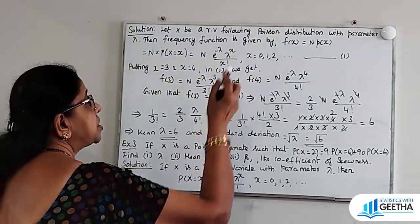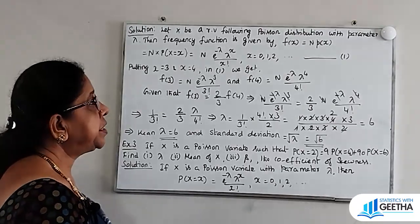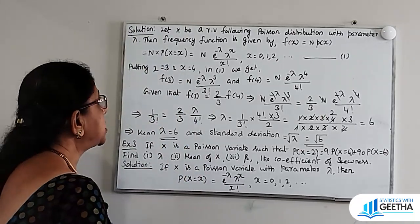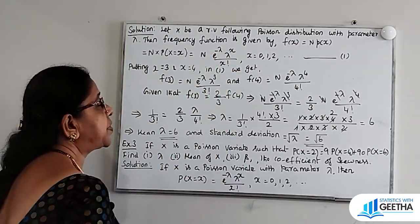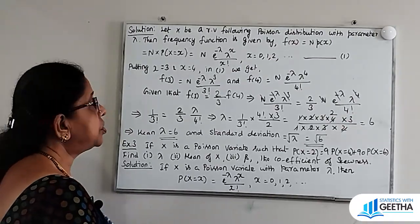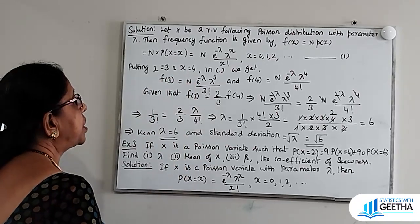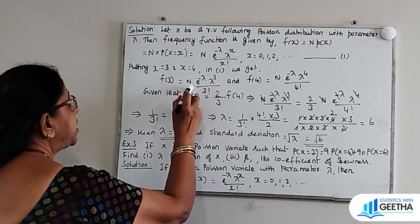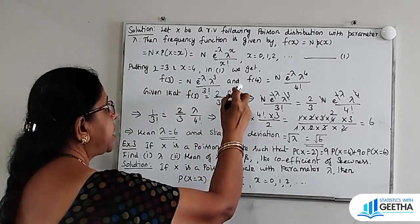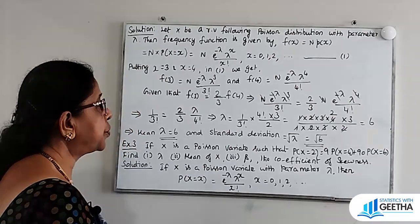The frequency function is given by f(x) = N · P(X=x), that is N · e^(−λ) · λ^x / x!, where x = 0, 1, etc. Putting x = 3 and x = 4, we get f(3) = N · e^(−λ) · λ³ / 3! and f(4) = N · e^(−λ) · λ⁴ / 4!.